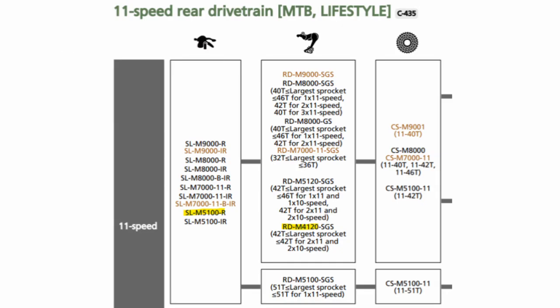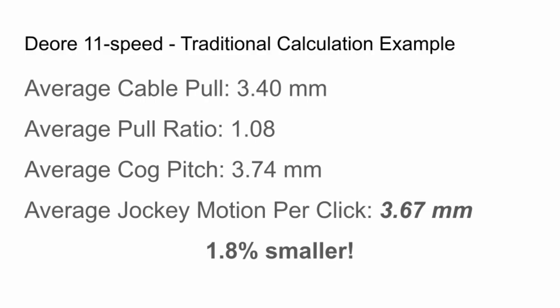Shimano says that their SL-M5100 shifter is compatible with the RD-M4120 derailleur and an 11-speed cassette. I've measured the shifter and derailleur and I'm fairly certain of the average cog pitch of the cassette. The shifter has an average cable pull of 3.4 mm, the derailleur has an average pull ratio of 1.08, and the cassette has an average cog pitch of 3.74 mm. However, the jockey only moves 3.67 mm per click on average — 1.8% smaller than we would expect.